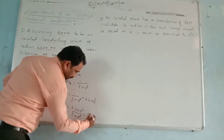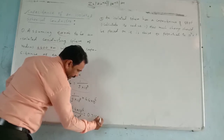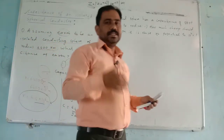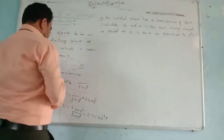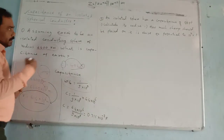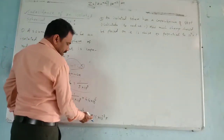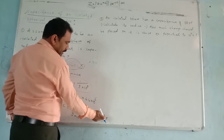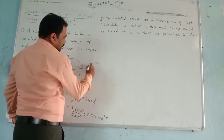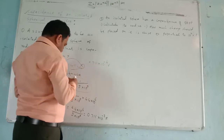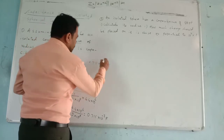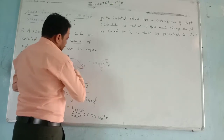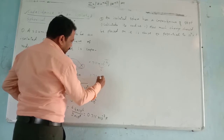The calculation gives C = (6.4 × 10⁶) / (9 × 10⁹), which is approximately equal to 0.711 × 10⁻³ farad — that is, in millifarads. Converting further: 0.711 × 10⁻³ farad equals 711 × 10⁻⁶ farad. This 10⁻⁶ represents microfarad. So the answer is 711 µF.